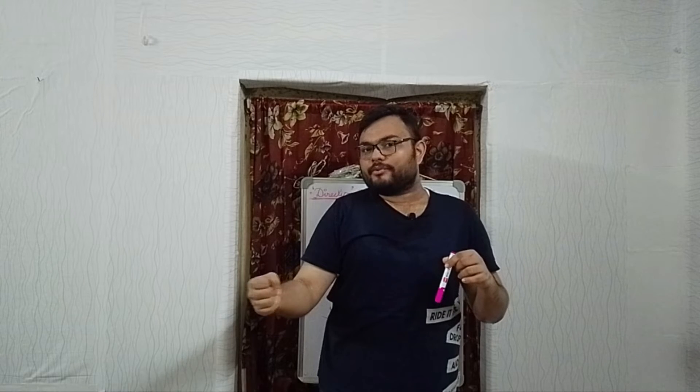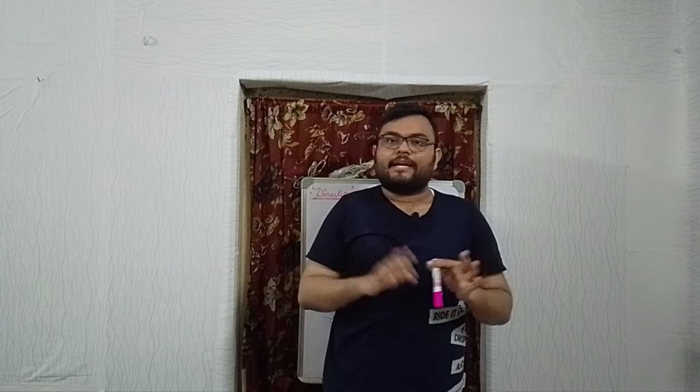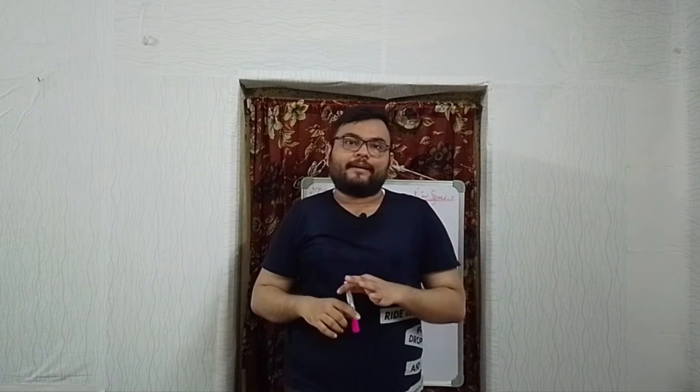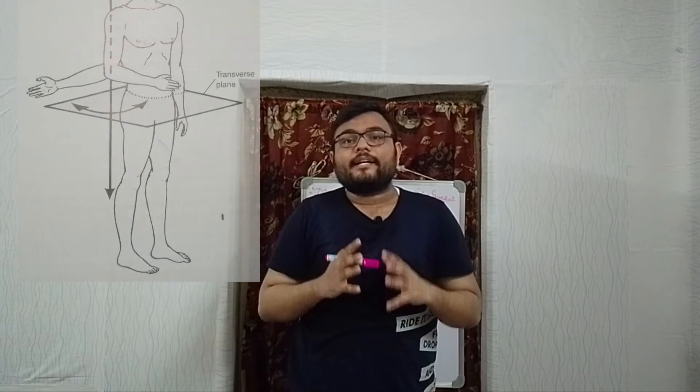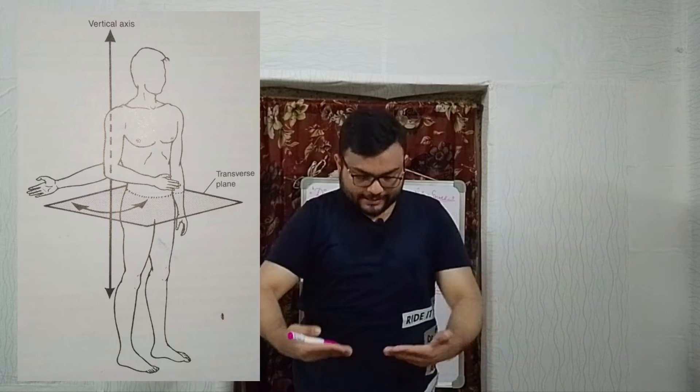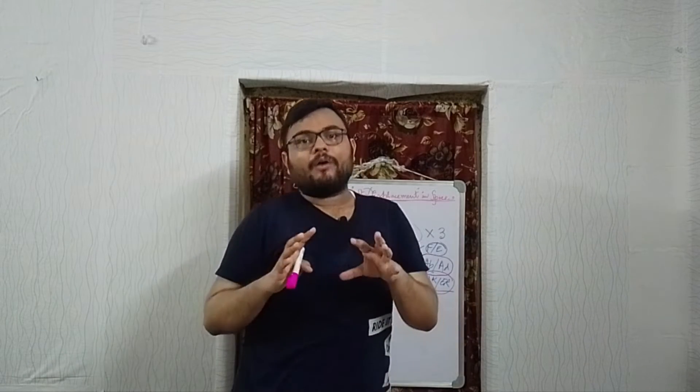The third pair is internal rotation and external rotation. Internal rotation means rotating the segment internally and external rotation means rotating it externally. You can see this movement from the above view, so it occurs in the transverse plane. The axis perpendicular to the transverse plane is the Y axis or the vertical axis. So internal and external rotation happen in the transverse plane around the vertical or Y axis.